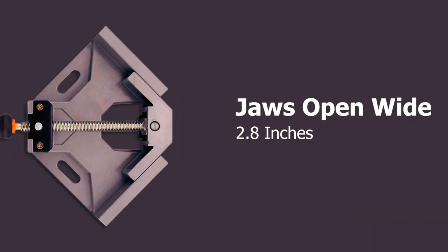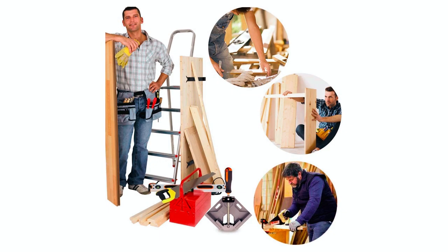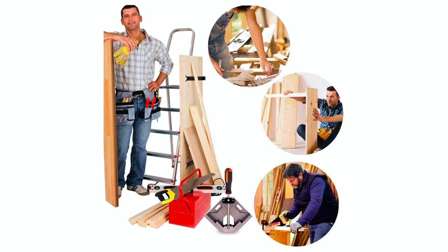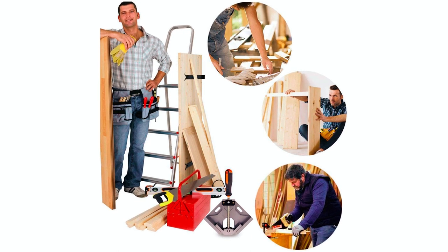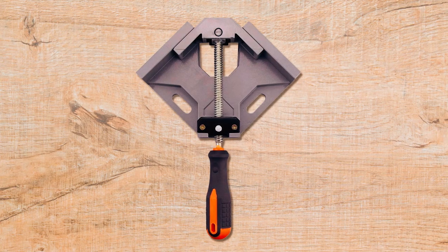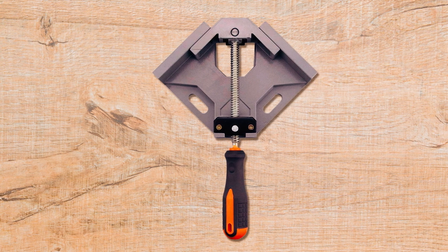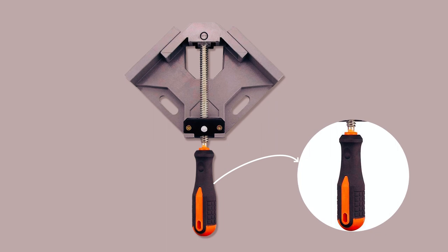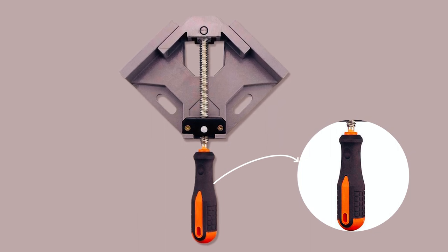The jaws can open wide enough to accommodate objects up to 2.8 inches wide. Also, the rust-proof steel and aluminum body of this corner clamp makes it strong enough to handle difficult DIY projects. With all that, there is no doubt that this corner clamp is one of the best options for furniture making and welding. Also, this corner clamp is so easy to use thanks to the large handle and fitted rubber grip.